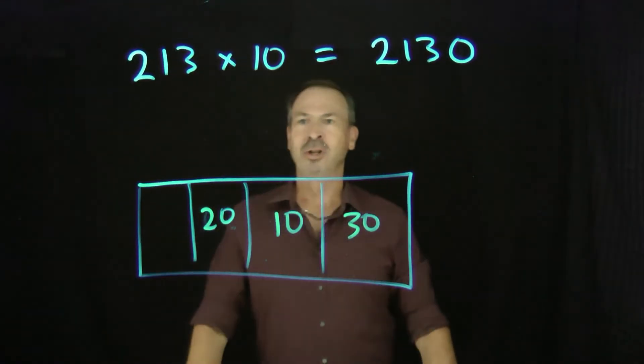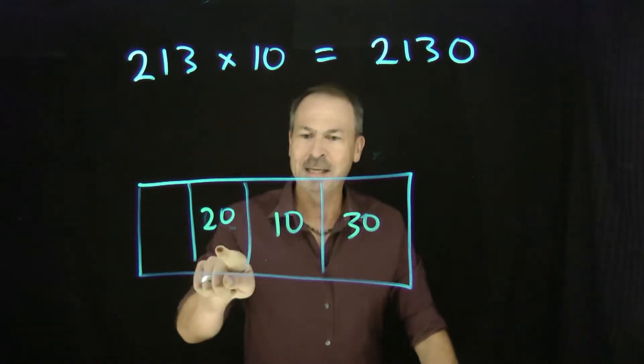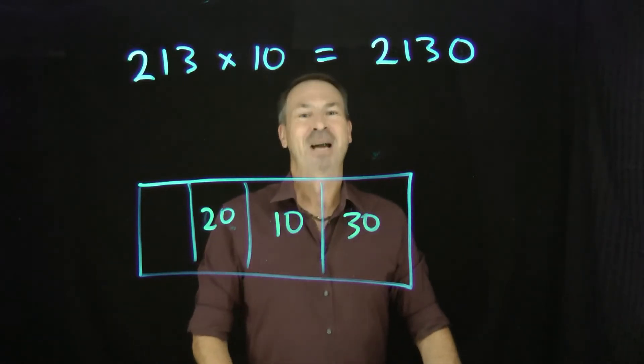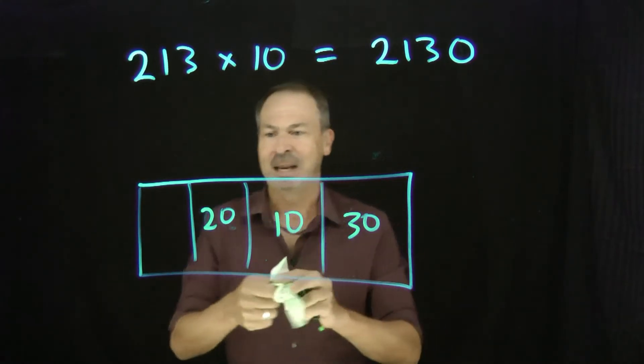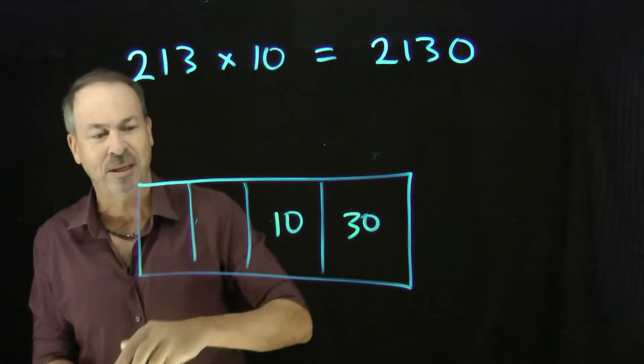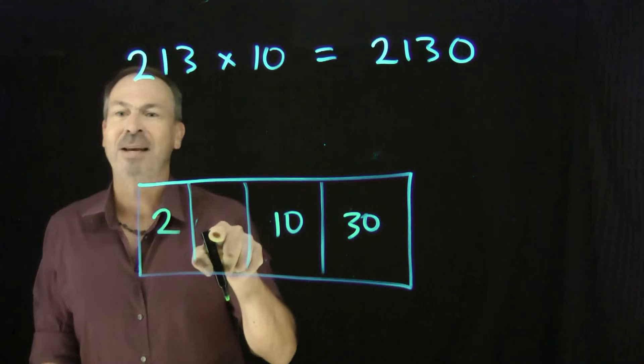There it is. There's my answer to 213 times 10. It's 20 hundreds, 10 tens, 30. Alright, of course there's going to be some explosions now. In fact, two explosions here. Two explosions make a dot and a dot, leaving none behind. Alright, so two explosions make two dots there, leaving none behind.